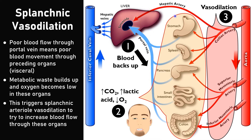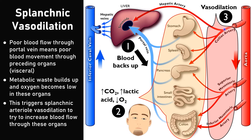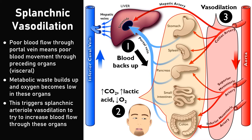You get a lot of pressure building up here. It's not really helping these organs because you're not getting much blood through them anyway, but you are building up pressure. When all this blood comes through due to vasodilation, it steals blood away from the rest of the body, creating systemic hypotension — low blood pressure — which has significant effects on the kidney.